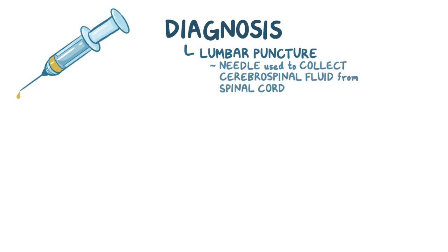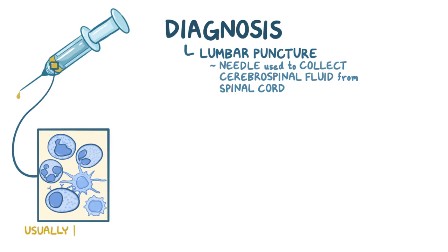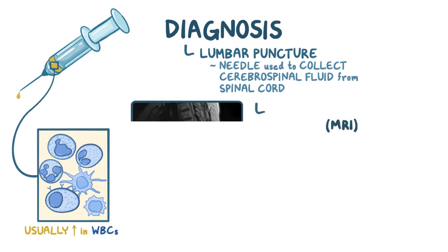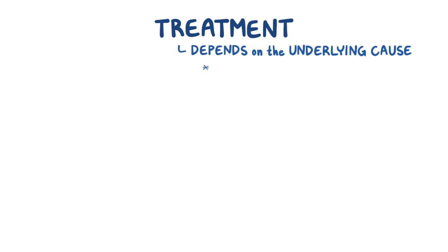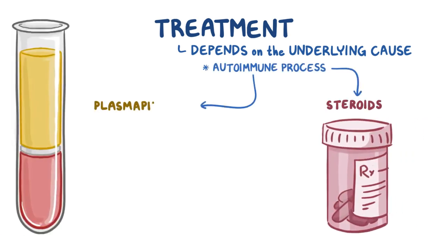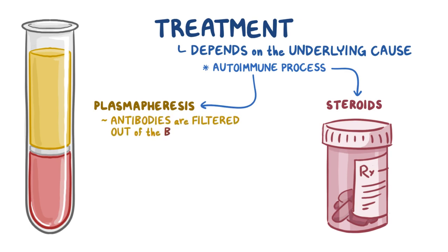Diagnosis of transverse myelitis can be done with a lumbar puncture, where a needle is used to collect cerebrospinal fluid from around the spinal cord. In transverse myelitis, there is usually an increase in white blood cells. In addition, MRI — magnetic resonance imaging — can be used to spot areas of inflammation in the spinal cord. Treatment depends on the underlying cause; if there is an autoimmune process, it might be useful to use steroids or plasmapheresis, which is where antibodies are filtered out of the blood.